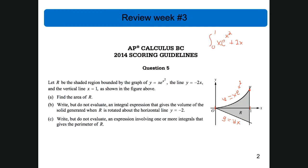Part B says write but do not evaluate an integral expression that gives the volume of the solid generated when R is rotated about the horizontal line y equals negative 2. That point is 1, negative 2, so rotating around that horizontal line is definitely the washer method. Part C says write an expression for the perimeter of R — we can't do that yet because today we're going to learn how to find the arc length of a function.